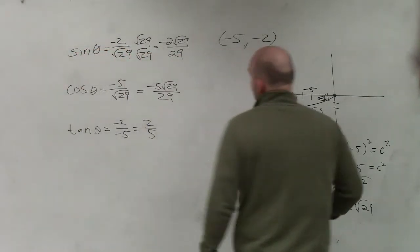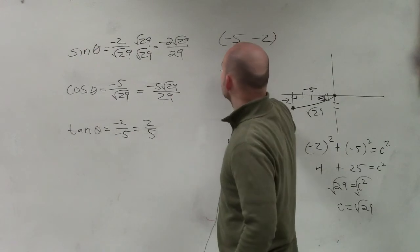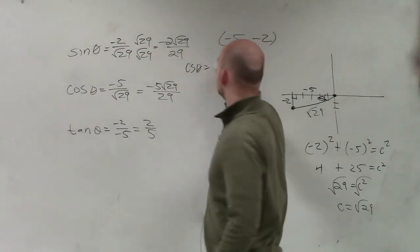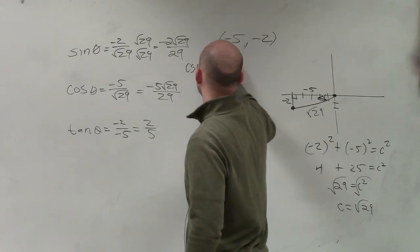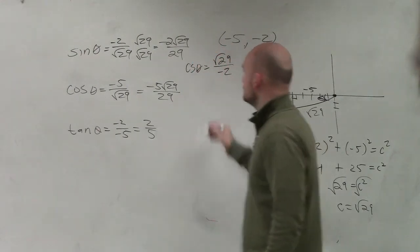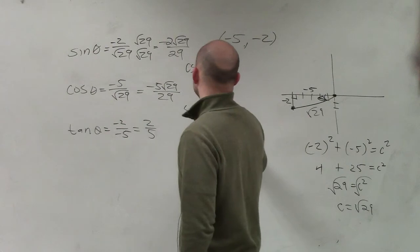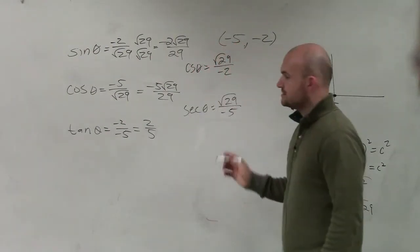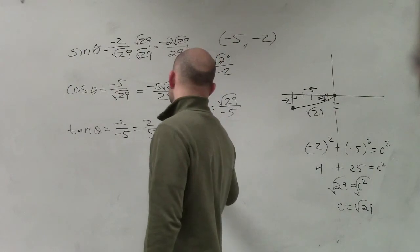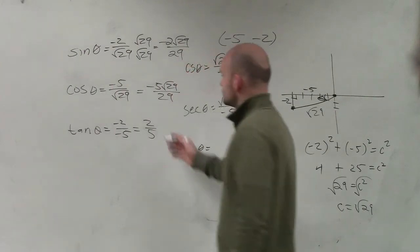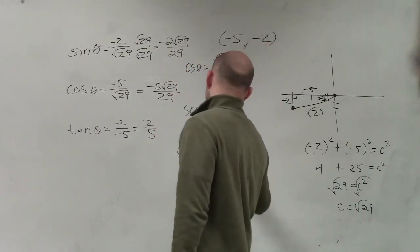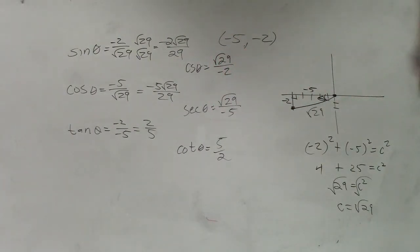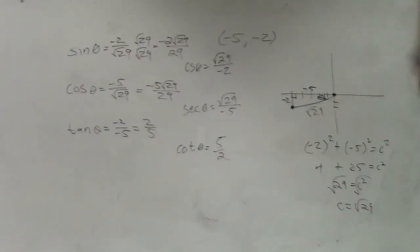The next one, it says there's six trigonometric functions. So now I'm going to have cosecant of theta, which is just going to be the reciprocal of this, which is square root of 29 over negative 2. That's done. Secant of theta equals square root of 29 over negative 5. And that's done. And then cotangent is just going to be reciprocal of our final answer, which will be 5 halves. OK? So go ahead and give you guys self-